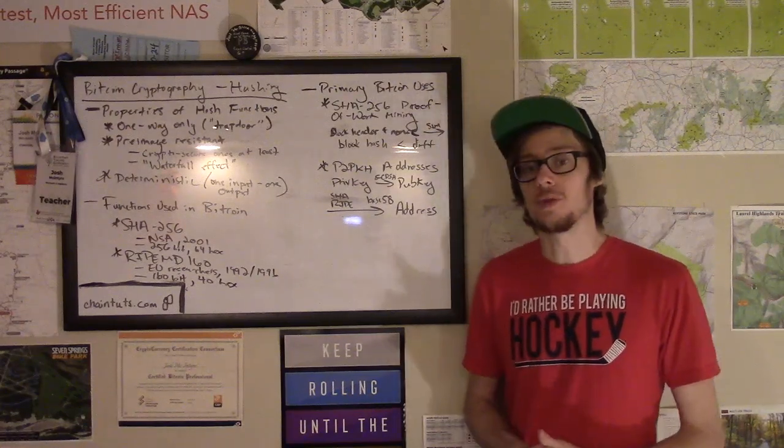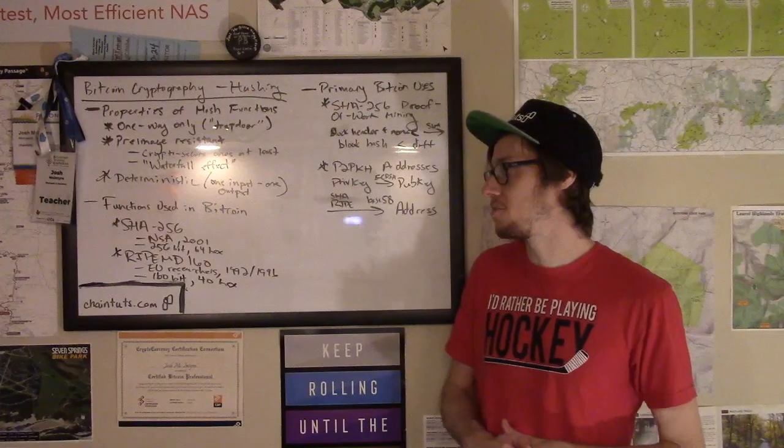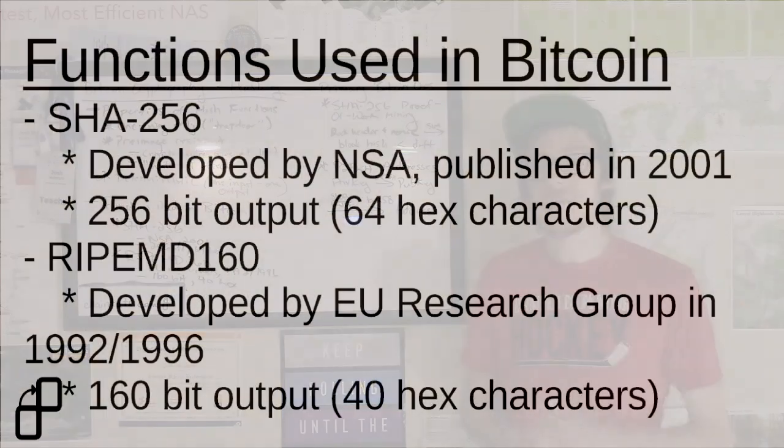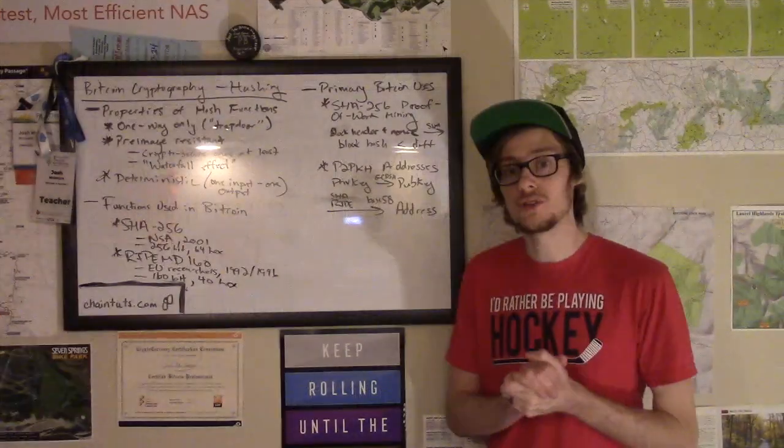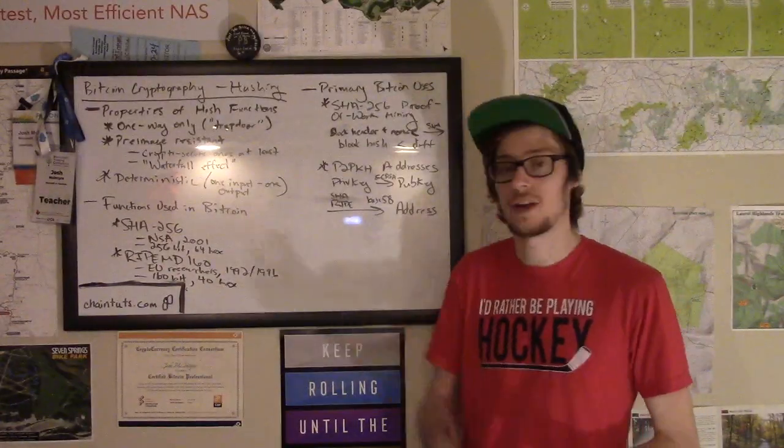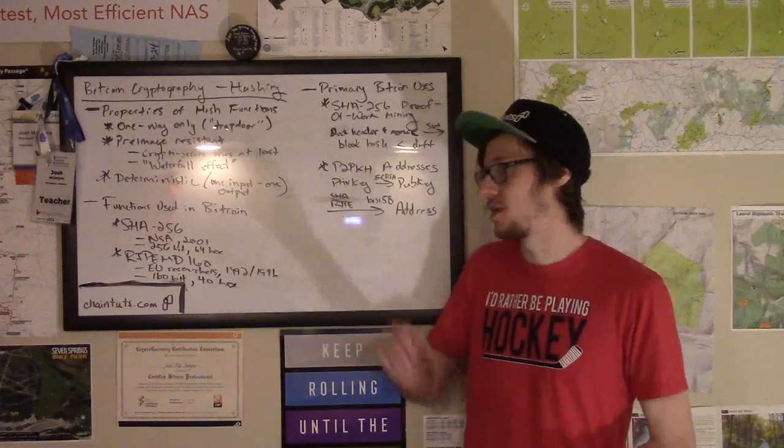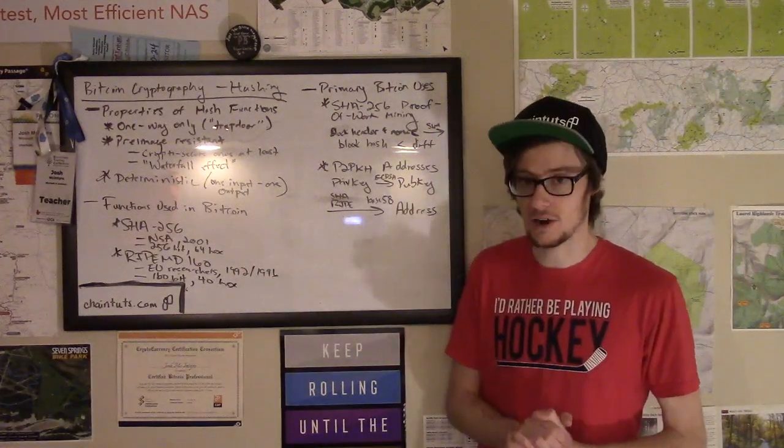The second one that we see in Bitcoin is RIPEMD-160. This was designed by a group of EU researchers in a more open source manner. The initial versions were published in 1992 with an update published in 1996. This particular version that we're using in Bitcoin gives us a 160-bit output that's often represented as 40 hexadecimal characters.